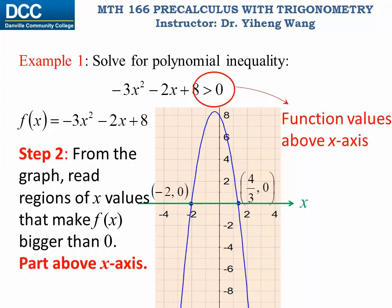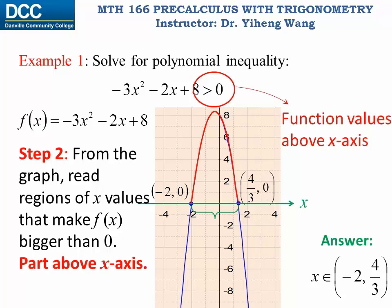We know the two x-intercepts have function values of zero, so we can easily tell which part of the graph is above the x-axis. Reading that region gives us the solution: x must be between negative two and four-thirds, because those are the x values that make the function value bigger than zero. We can rewrite this as negative two is less than x less than four-thirds. That is the answer to this polynomial inequality.